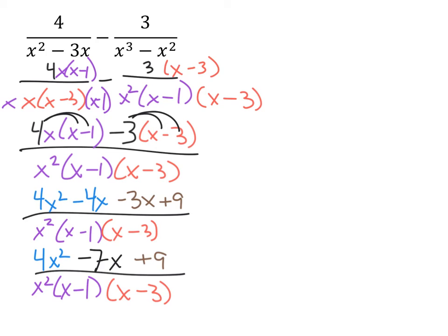And that's it, that's pretty much simplified, we can't really cancel anything out. We could try to factor out this 4x squared minus 7x plus 9, but it's not going to work. As it turns out, this is our final expression, and that's about as simplified as we can make this.